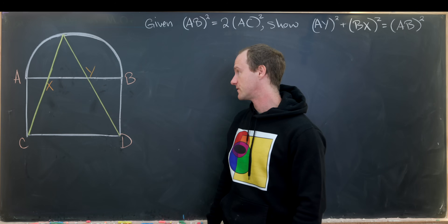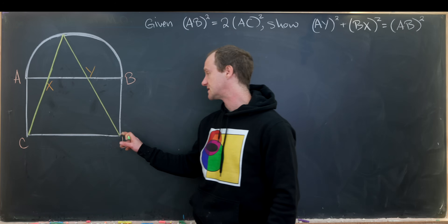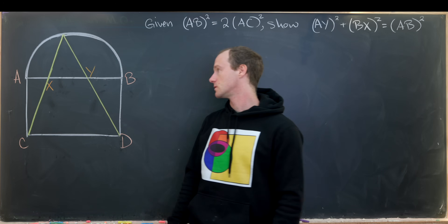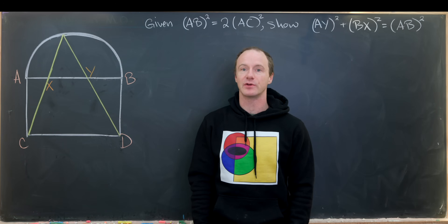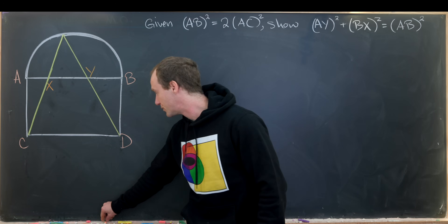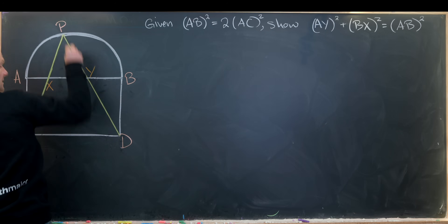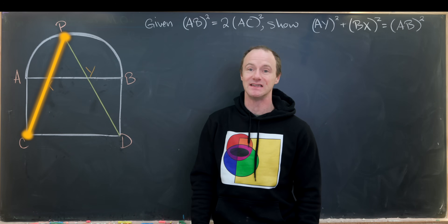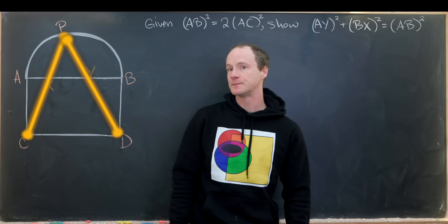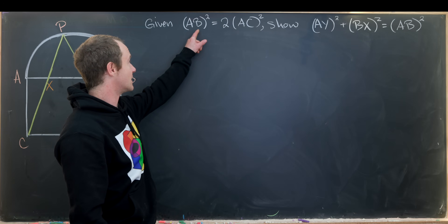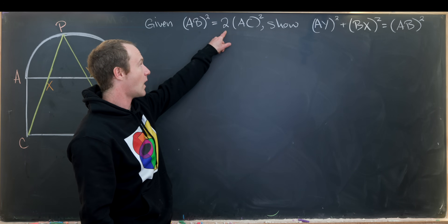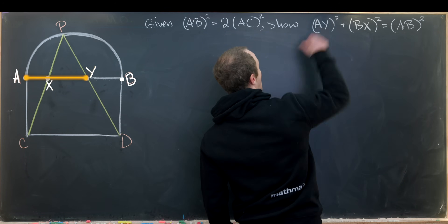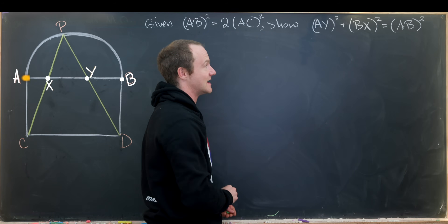So let's see the setup. We have a rectangle A, B, C, D. And on top of that rectangle, we have a semicircle — a half circle — so that AB is a diameter of that semicircle. Next, we put a point P on the semicircle and connect line segments to vertex C and vertex D. Given that AB² equals twice AC², we want to show that AY² plus BX² equals AB².